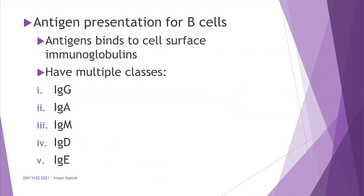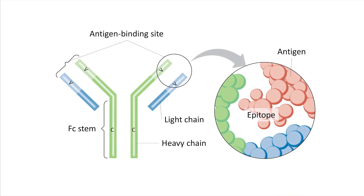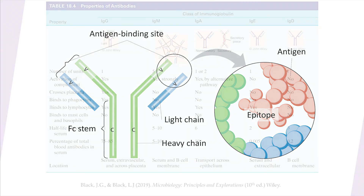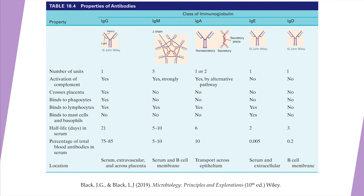In the case of B cells, the APC presents the antigen to the cell surface immunoglobulins (IG). Immunoglobulins have many classes, but all share the same basic structure: heavy chains and light chains, an Fc stem region on the heavy chain, and variable regions at the upper tip where epitopes are located and antigens will bind. The five classes of immunoglobulins are detailed in table 18.4 of the reference book.